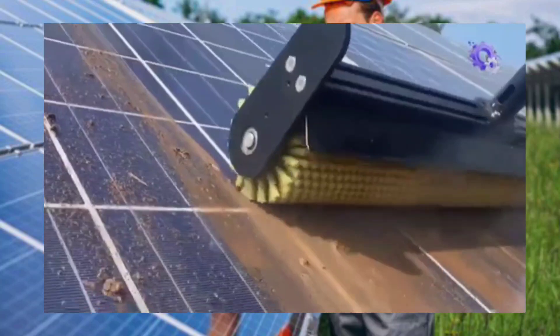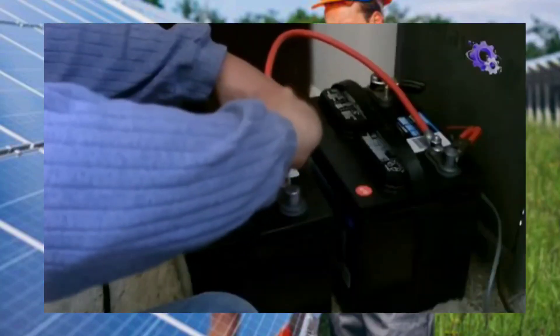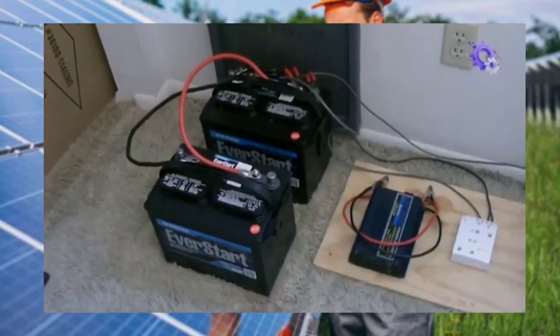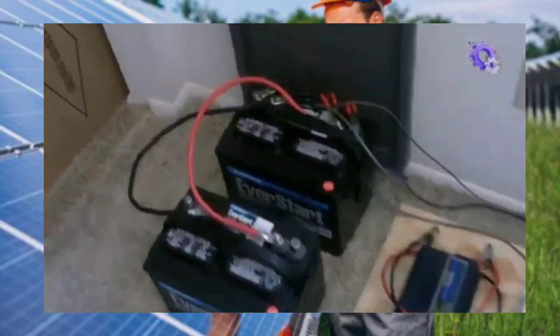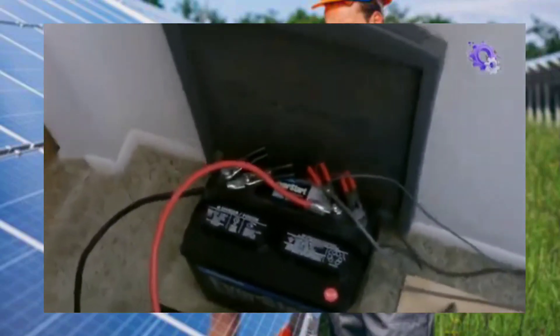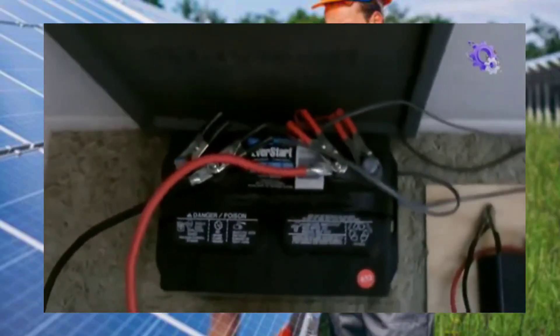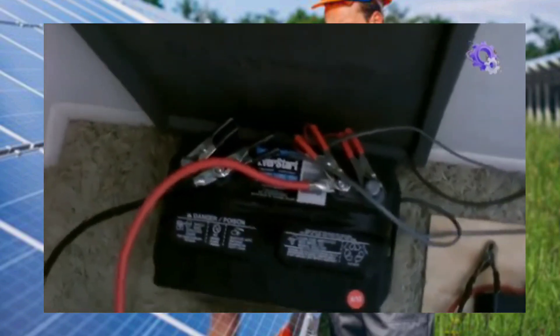Finally, establish a routine for monitoring and maintaining your solar power system to ensure long-term reliability and efficiency. Regularly check battery levels, inspect wiring connections and perform any necessary maintenance tasks.